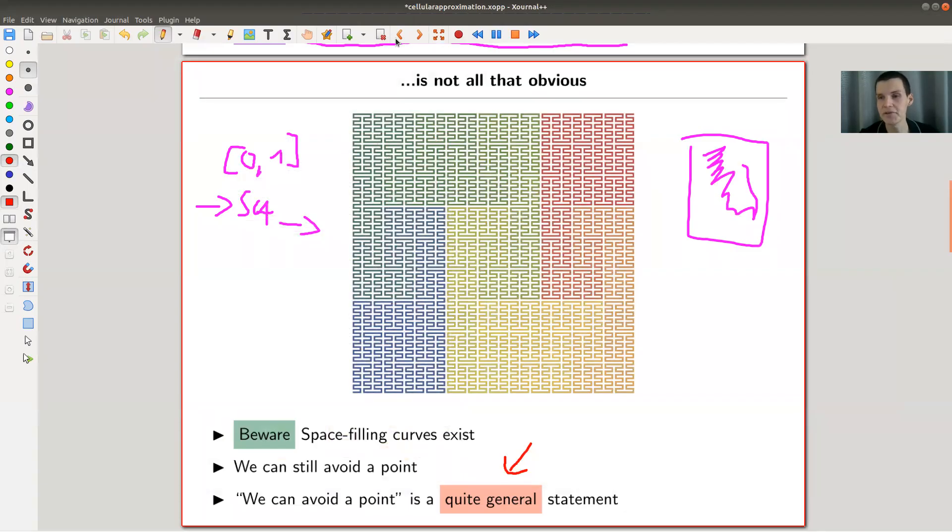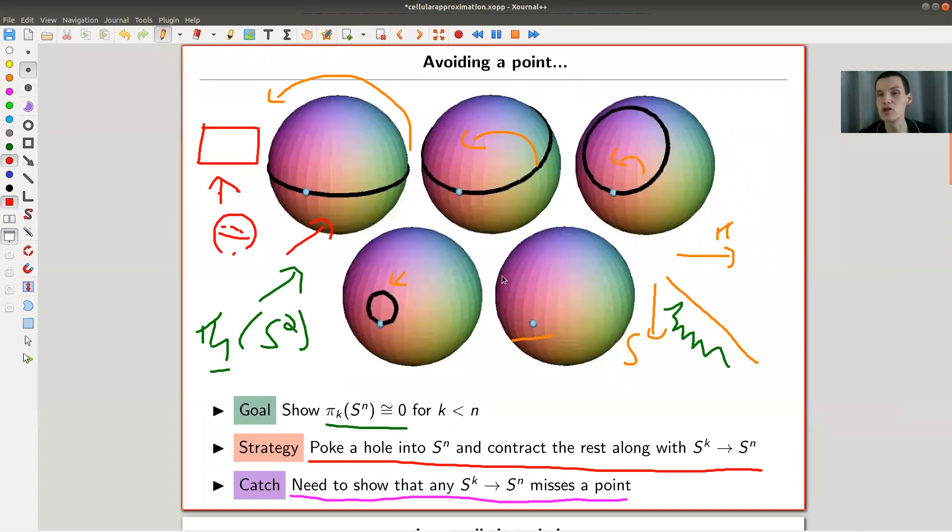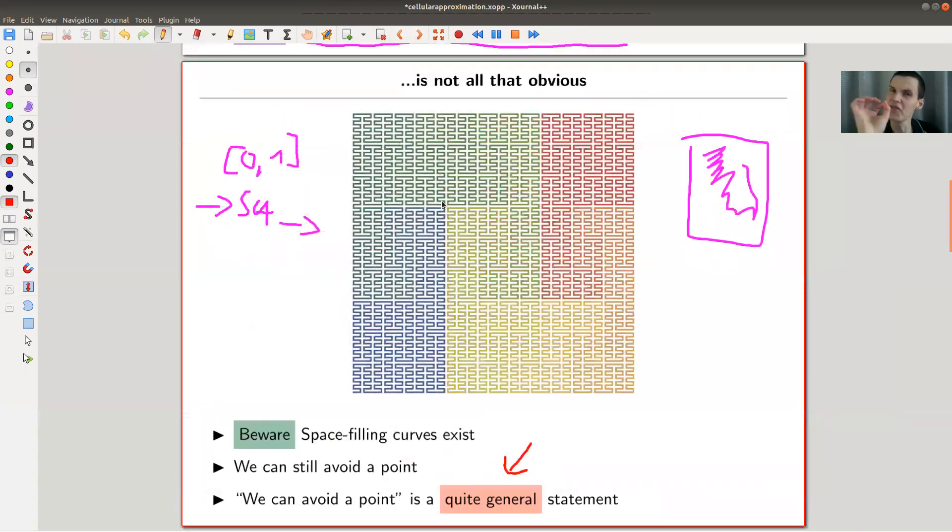Anyway, if you push this to infinity you get your space-filling curve: you have a map from [0,1] into the square which kind of fills, which hits every point of the square. And this is, of course, kind of bad because we kind of want to push everything away from at least one point.